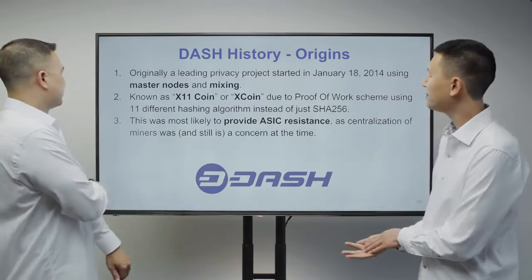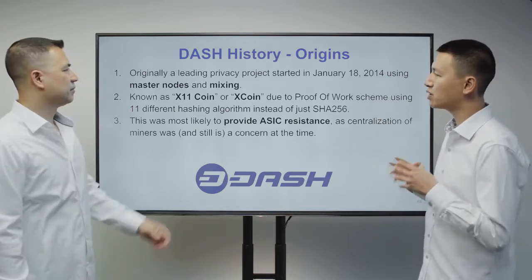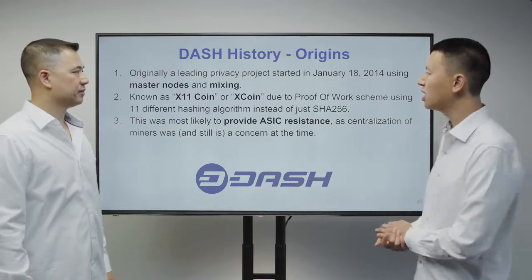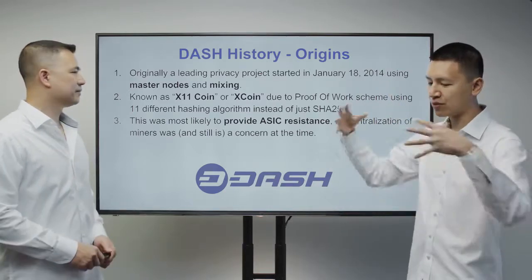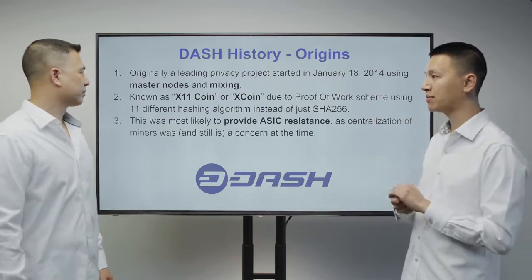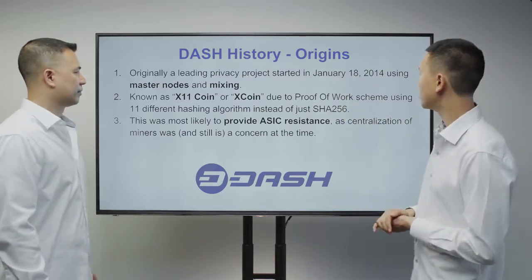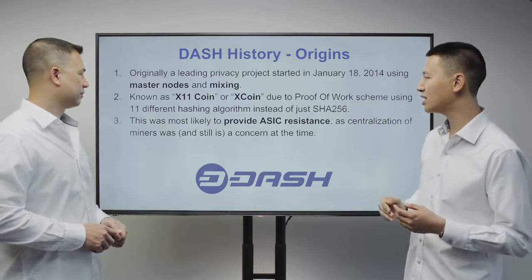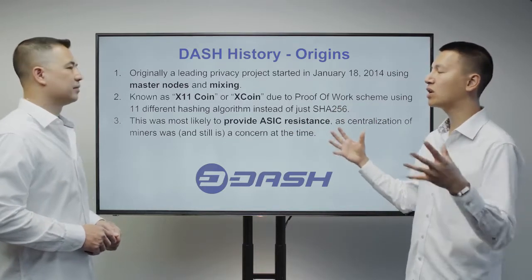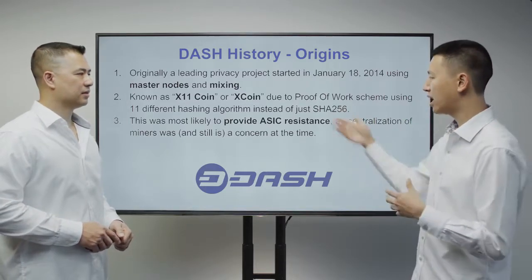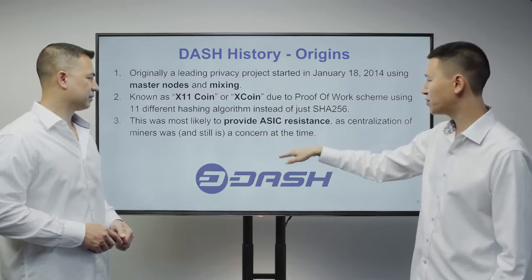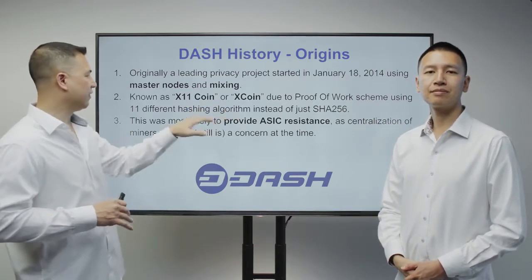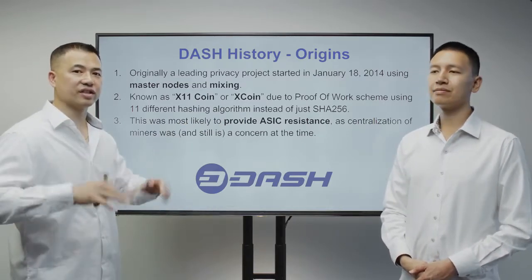Dash was started in 2014 and was one of the first privacy projects. It tried to build mixing as a service within the currency itself rather than requiring a third-party mixer. It was originally known as X11 coin because the proof-of-work mining algorithm used 11 different algorithms instead of just SHA-256, to provide ASIC resistance and prevent mining power from being concentrated into huge pools.